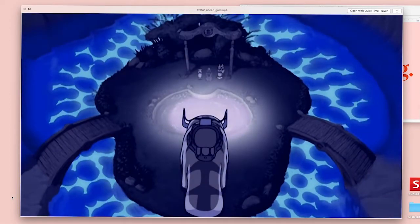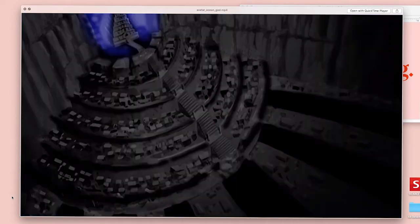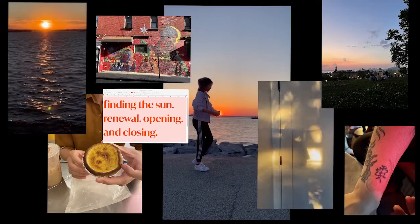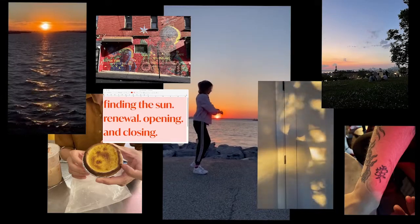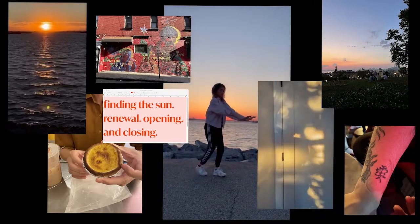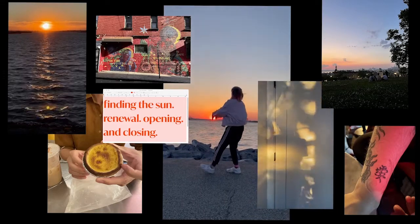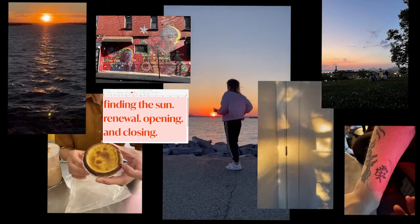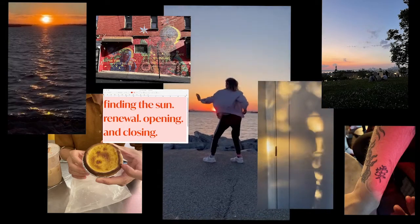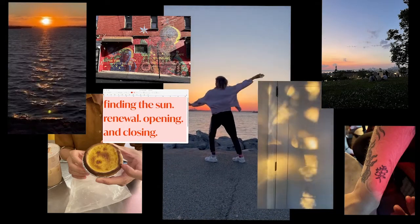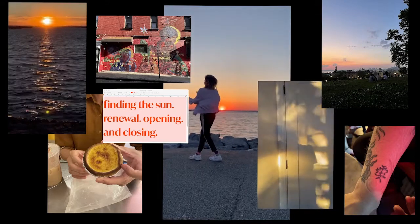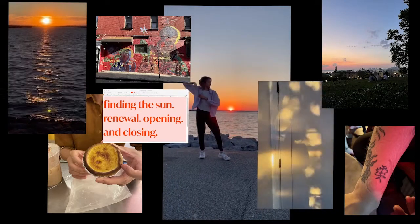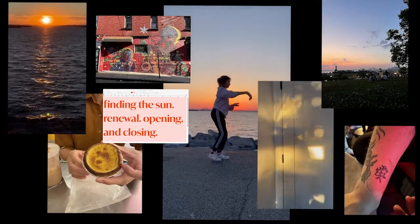Here is an example of a desktop collage I made using some of the videos and photos from my archive, visualizing different rituals of care. In this collage we see a collection of different images I took over the past week — a video of me dancing in front of a sunset, a beautiful sunset with ocean waves glistening with golden light, and some golden hour lighting on my doorway.